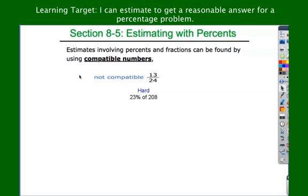Take, for instance, 13/24. Now, 13/24 — I cannot do that in my head. Those numbers are not compatible. The word 'compatible' always makes me think of eHarmony or those dating sites, because that's what the commercials say — imagine one of the seven levels of compatibility.